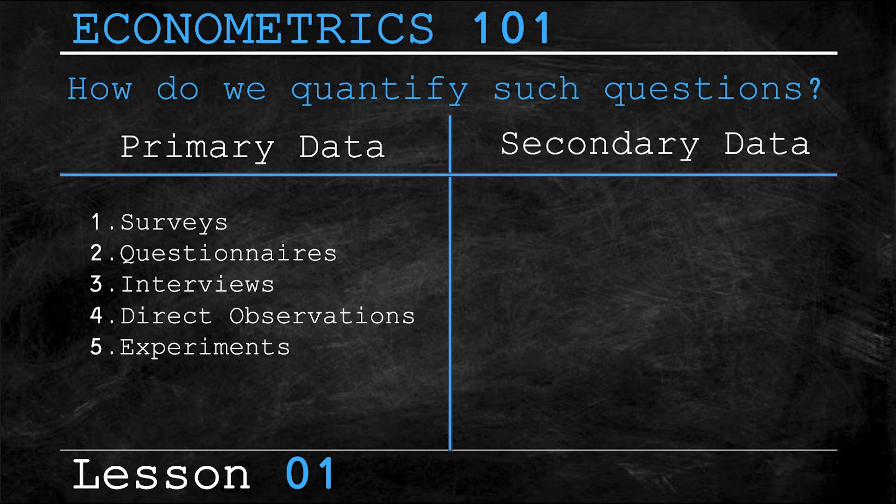However, collecting primary data may not always be feasible, as it may be time consuming, expensive, or you simply don't have access to a large enough sample size. And that's where secondary data comes in. Secondary data is data that's already been collected from another entity, and you are simply using those results, even though you haven't collected the data yourself.